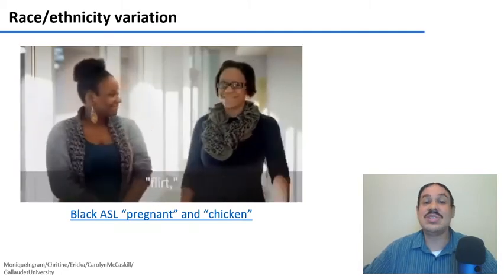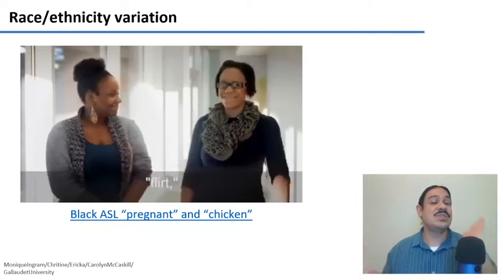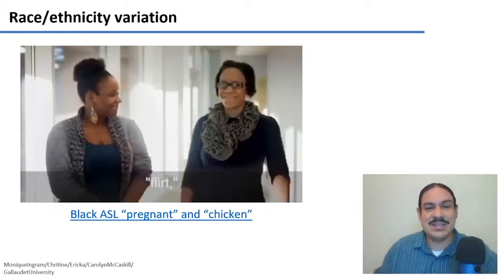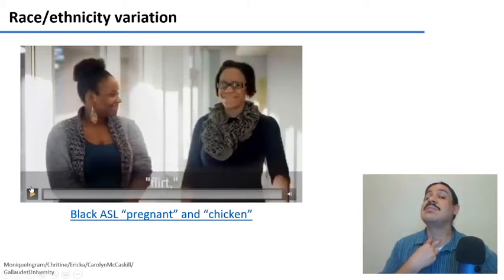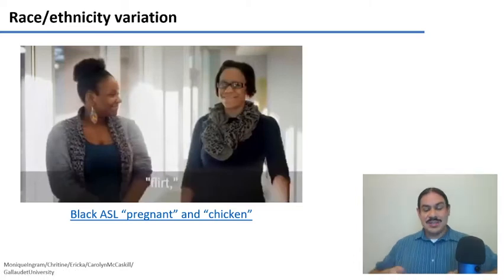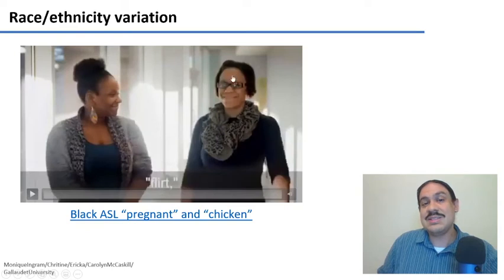The person on the right is doing the ASL signs and the person on the left is doing the Black ASL signs. As you can see, 'pregnant' is something like this in Black ASL, and 'chicken' is something like this. Let me show it to you again — the person on the right is doing the standard ASL and the person on the left is doing Black ASL.